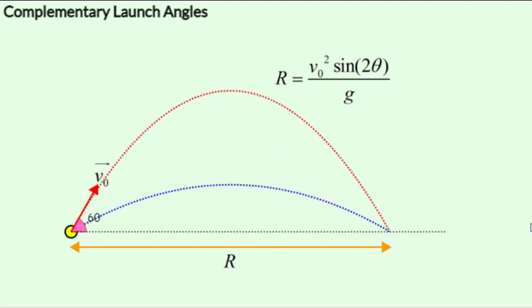This is a pair that we've already discussed. So 30 and 60 gives us the same range because they are complementary since 30 plus 60 is 90.